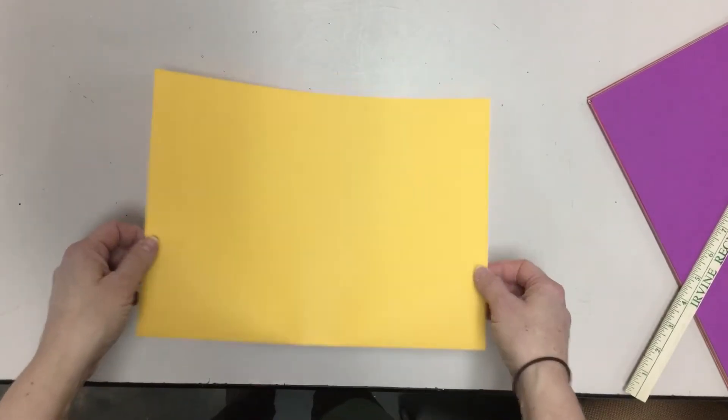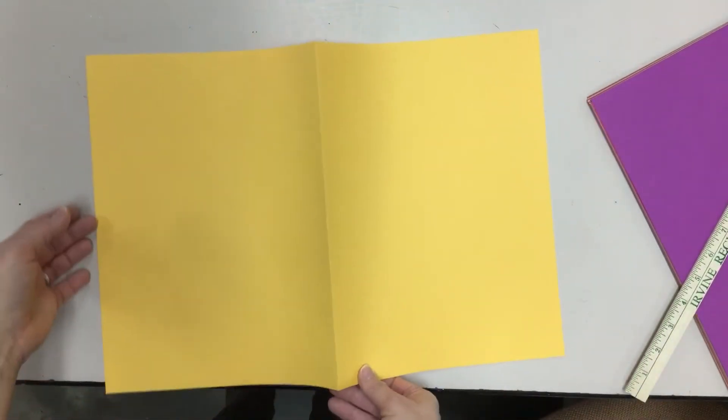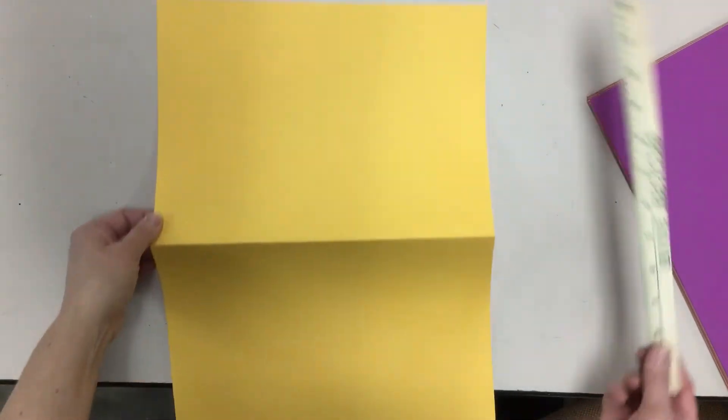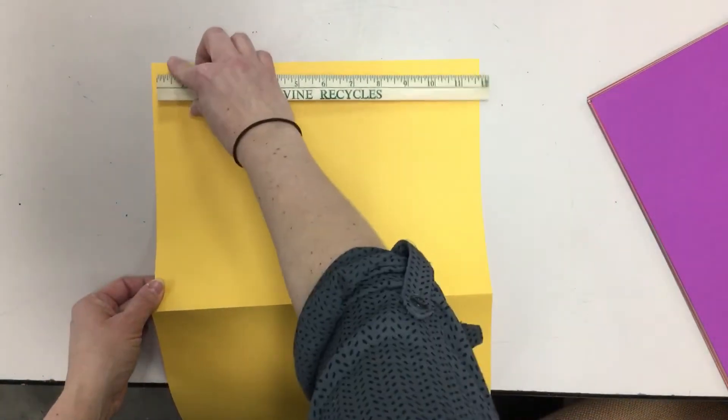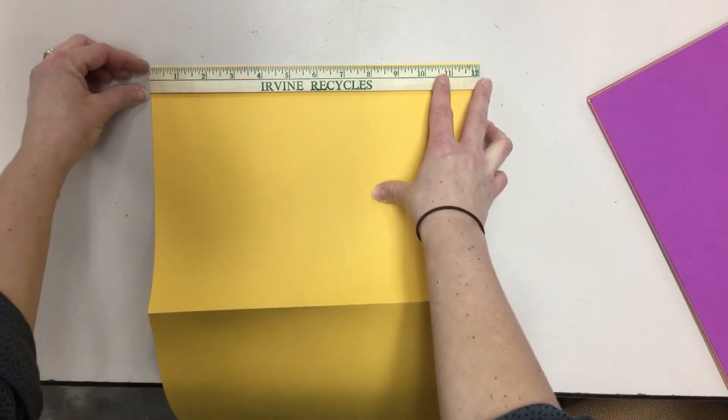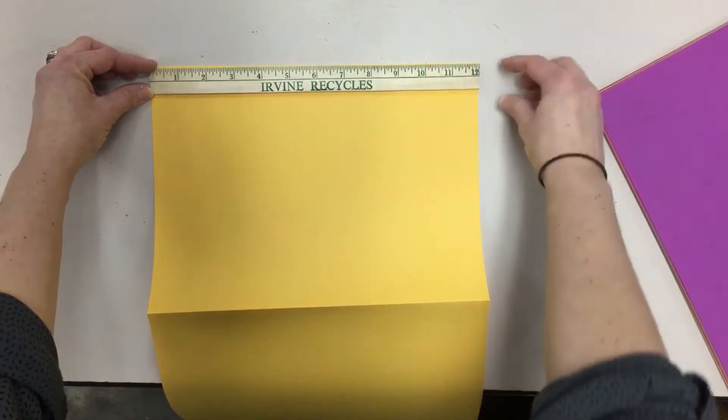Then I'm going to open it up and make sure that it looks even. Once I have it opened up I'm turning it and I'm going to slide my ruler to the top of the page so that this is a ruler's width thick right here.